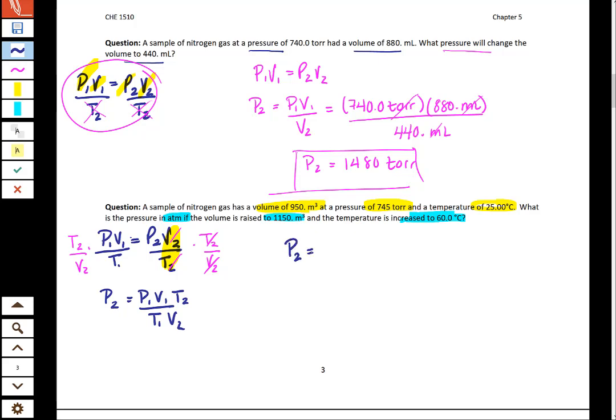Now that we have P2 alone let's plug in some values. Our P1 was given to us as 745 torr. Our V1 was given to us as 950 meters cubed. Do you remember how earlier we said that these need to be in a liter or milliliter? Well, a cubic meter is a volume unit as well, so this is perfectly appropriate. Our 25 degrees Celsius needs to be changed to Kelvin, and so does our 60 degrees Celsius.